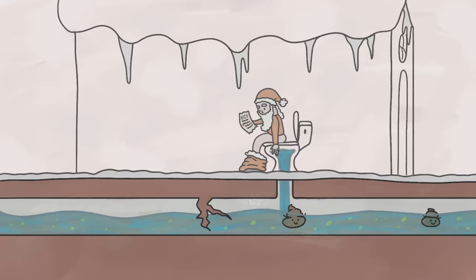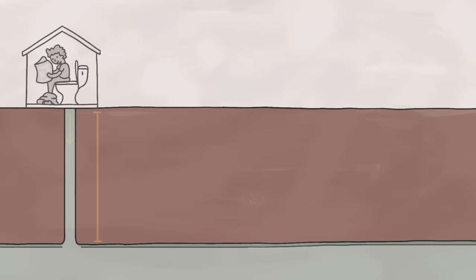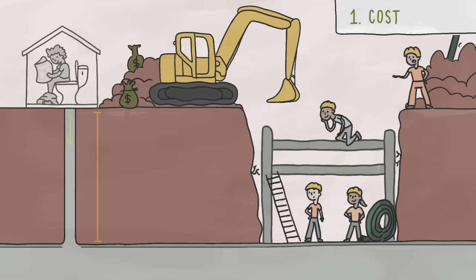First, because sewer lines are prone to breaking when it gets super cold or super stormy or super busy, in order to be effective, they have to be buried super deep underground, and that makes them super expensive to build and maintain.